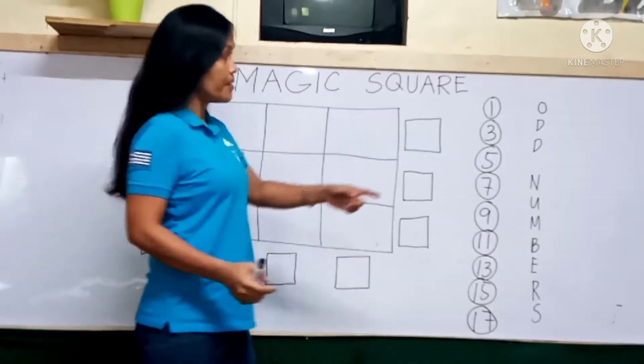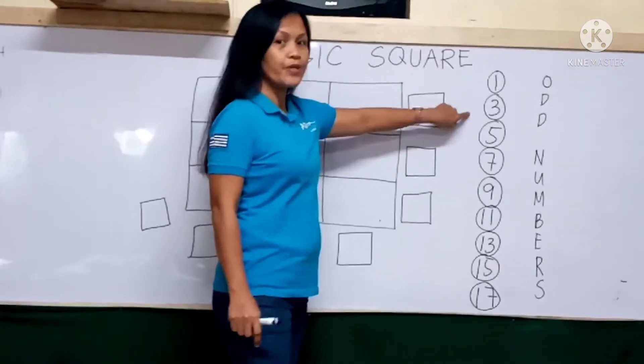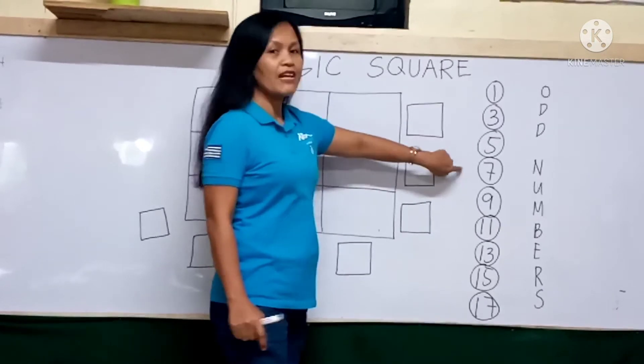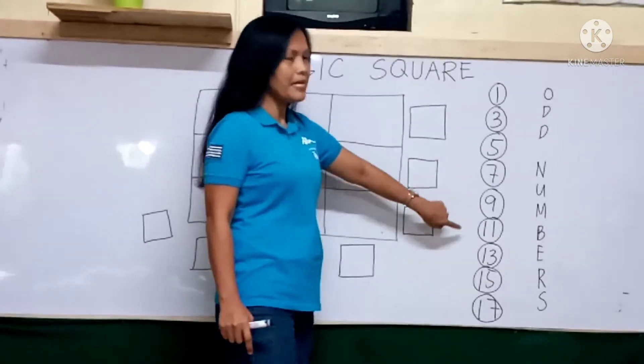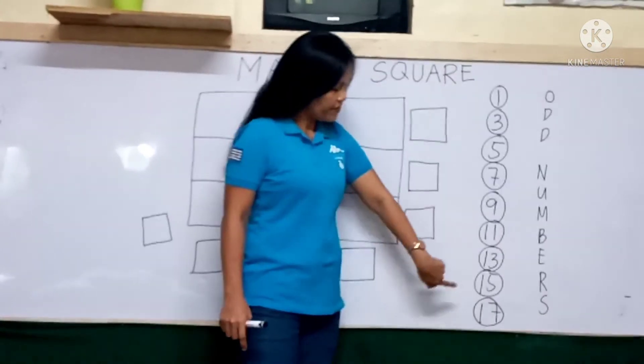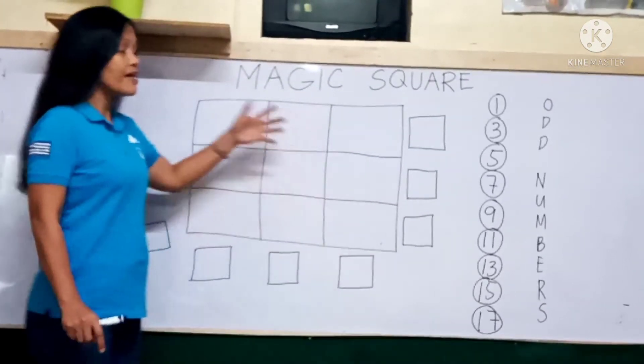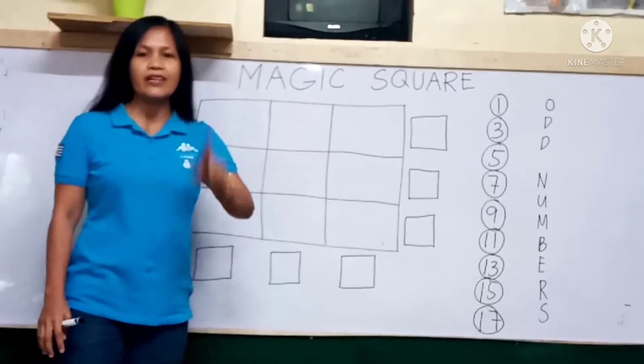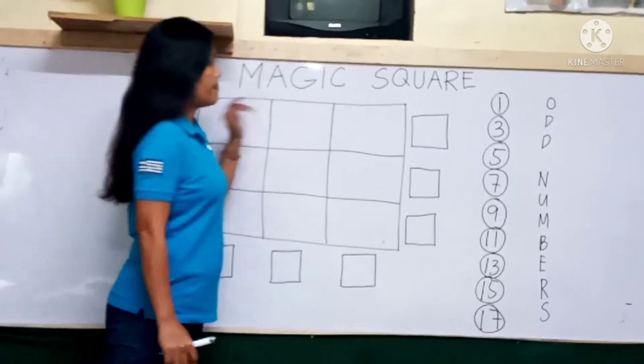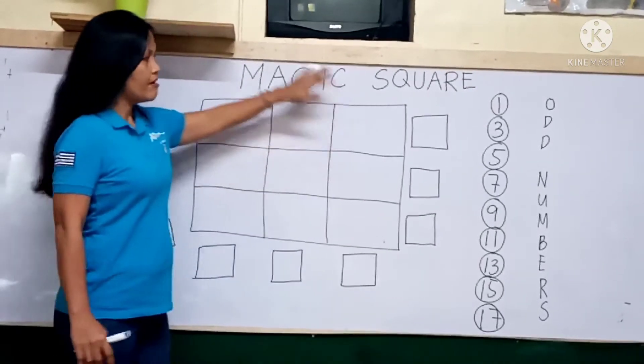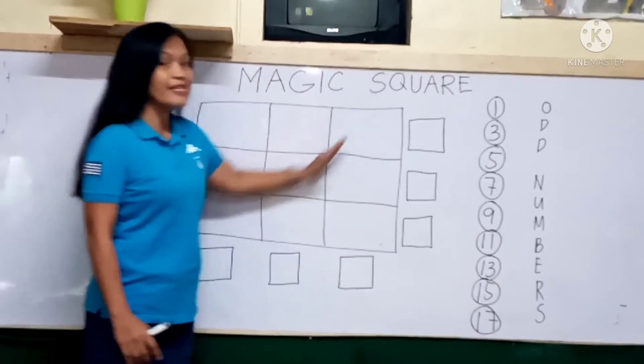Let us use these odd numbers 1, 3, 5, 7, 9, 11, 13, 15, and 17 to the respective boxes. Make sure that you end up with the same sum horizontally, vertically, and diagonally.